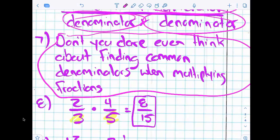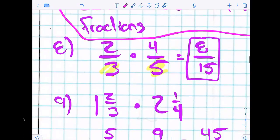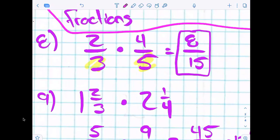So think about an angry parent telling you, don't you dare even think about whatever it is they're telling you. But in this case, finding common denominators when multiplying fractions. For number eight, all looks good. We just multiplied the numerator by the numerator and the denominator by the denominator.